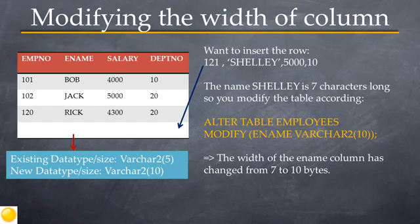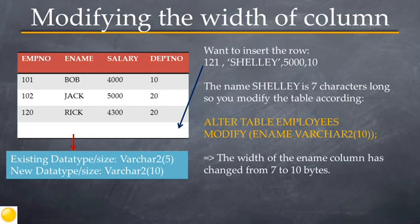The structure of the table is modified to increase the width of the ename column to 10 bytes using the command: ALTER TABLE employees MODIFY (ename VARCHAR2(10)). This type of change will allow you to successfully insert the desired row into the employees table.